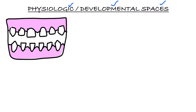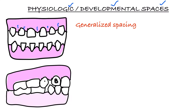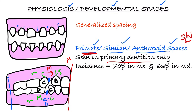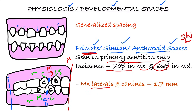Spaces in primary teeth are important and are called physiological or developmental spaces. There are two types: generalized spacing, present between all deciduous teeth, and localized spacing in specific locations — in the maxilla between the lateral incisor and canine, and in the mandible between the canine and first molar. These localized spaces are called primate spaces, simian spaces, or anthropoid spaces, as they are also seen in primates. In the maxilla the space is mesial to the canine; in the mandible it is distal to the canine.